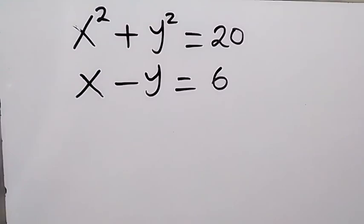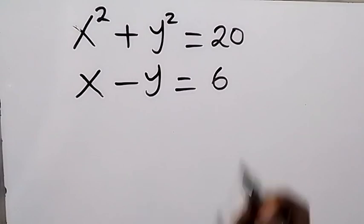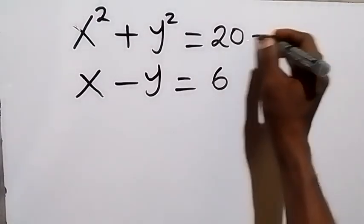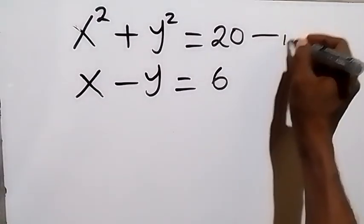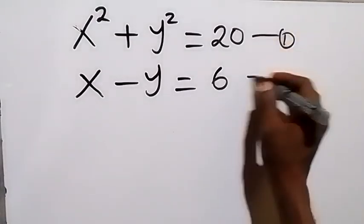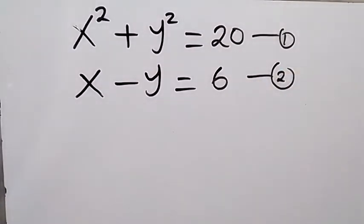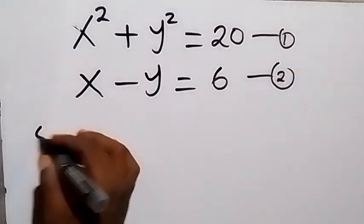Hello, you are welcome. How to solve this problem: x squared plus y squared equals 20 — let's call this equation 1 — and x minus y equals 6 — let's call this equation 2.